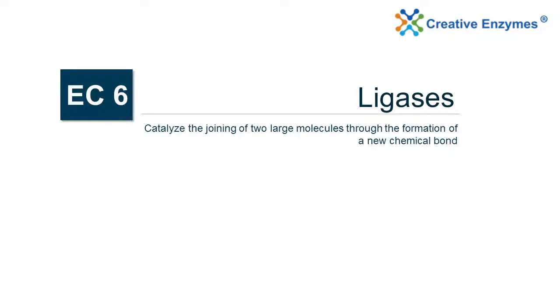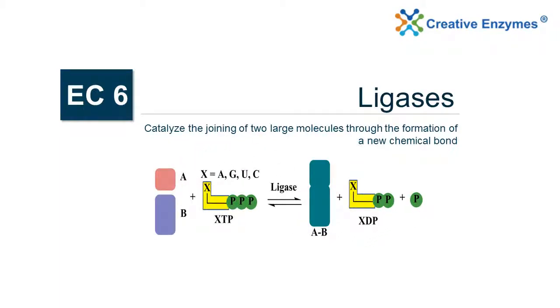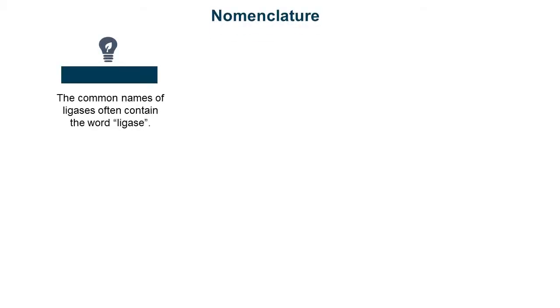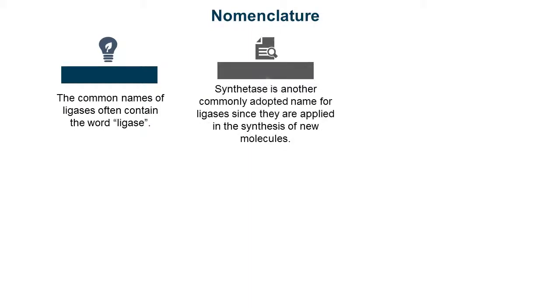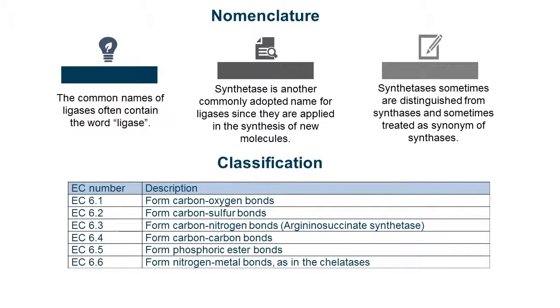EC6 — Ligases. Ligases catalyze the joining of two large molecules through the formation of a new chemical bond. The reaction is shown below. The common names of ligases often contain the word 'ligase.' 'Synthetase' is another commonly adopted name, since ligases are applied in the synthesis of new molecules. Ligases are classified as EC6 and can be further classified into six subclasses.